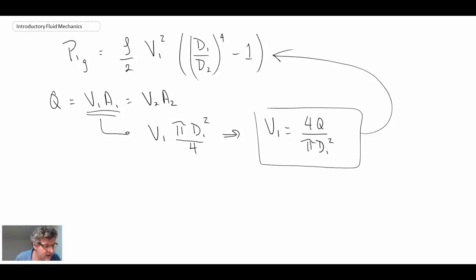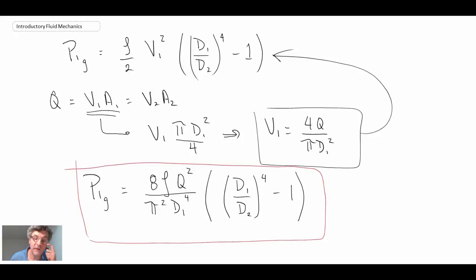That then becomes a relationship between the upstream pressure and the volumetric flow rate going through the nozzle, expressed only in terms of the density and the geometry of the nozzle itself. That solves the problem with what they were requesting and gives an example of how to apply Bernoulli along a streamline.